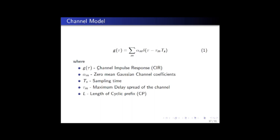Where G(τ) is the channel impulse response, αm are the channel coefficients, T is the sampling time, τm is the maximum delay spread of the channel, and L is the length of channel prefix. The cyclic prefix is fixed in such a way that L is greater than τm, the maximum delay spread of the channel.